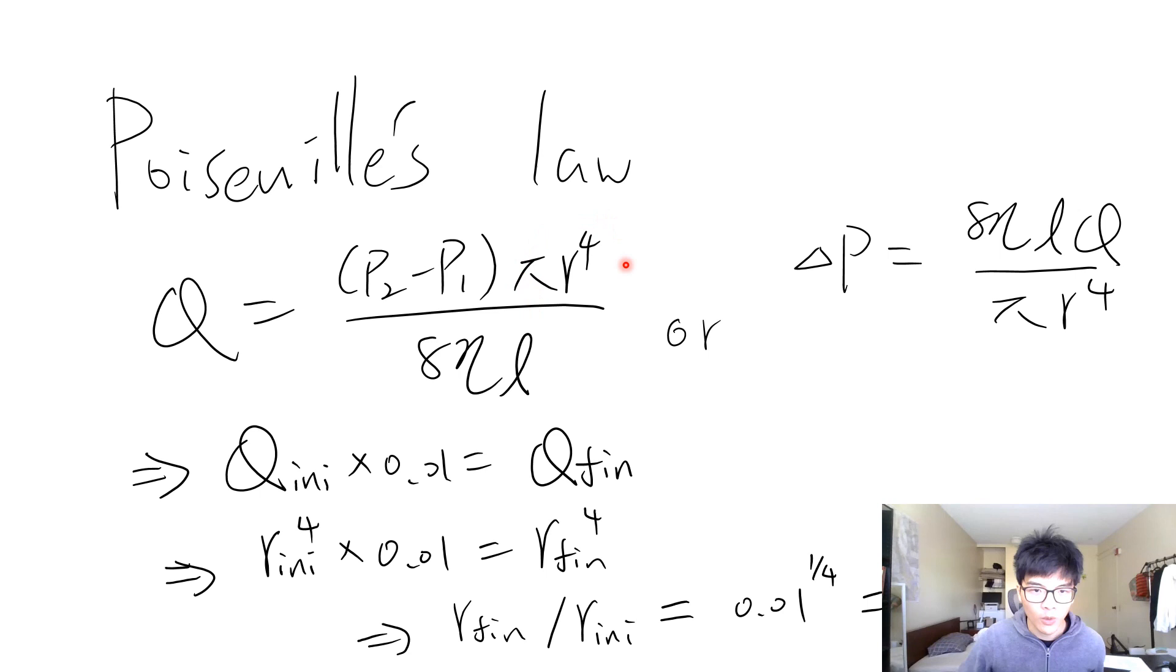So this delta P is the pressure difference, the difference of pressure. And 8 times eta, eta is the viscosity of the fluid, and L is the distance, this is the length of the pipe, it's the distance the liquid travels.